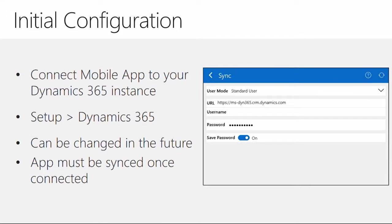Before taking you into the application, I want to talk about initial setup, configuration, and some use cases. First, once you download the application there is an initial configuration required. You need to go into the field service mobile application and connect it to your Dynamics 365 instance. Once connected, you'll perform an initial sync, which goes out into your organization based on who you are, grabs all the field service-related information, and brings it down onto the mobile application. You can change connection configuration options at any point, but you will need to perform that initial sync first.